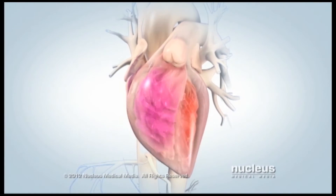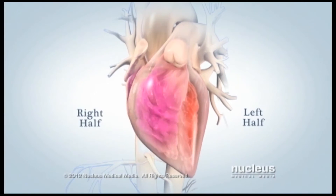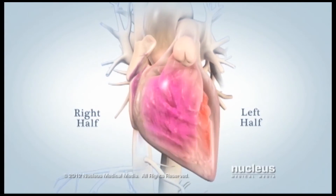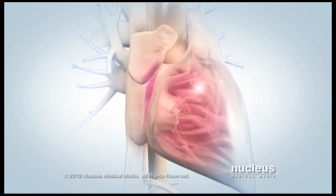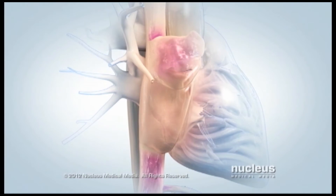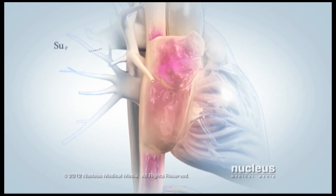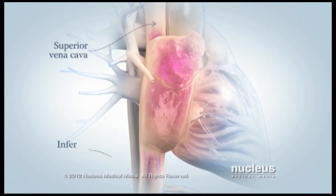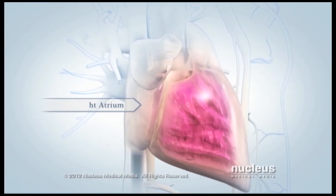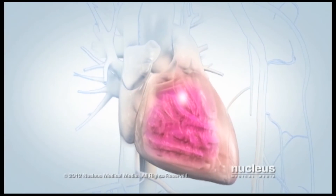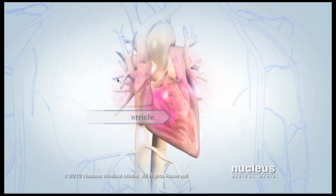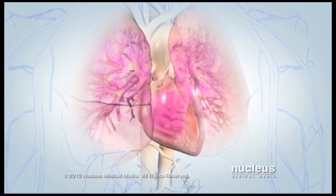Your heart is divided into left and right halves, which work together like a dual pump. On the right side of your heart, deoxygenated blood from your body's tissues flows through large veins, called the superior and inferior vena cava, into your right atrium. Next, the blood moves into your right ventricle, which contracts and sends blood out of your heart.